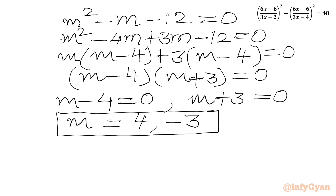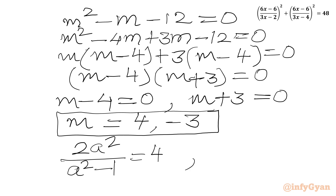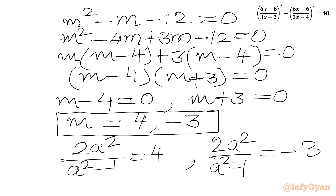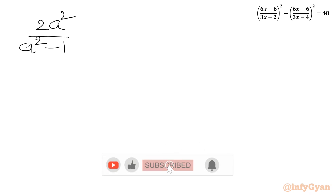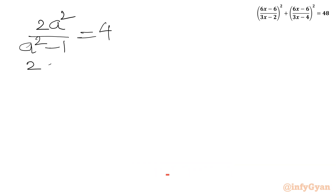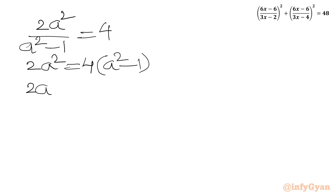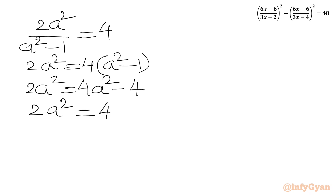Now m was our substitution 2a squared over (a squared minus 1). Setting this equal to 4 and cross multiplying: 2a squared equals 4(a squared minus 1), so 2a squared equals 4a squared minus 4, giving 2a squared equals 4. Dividing both sides by 2, a squared equals 2, so a equals plus or minus square root 2.